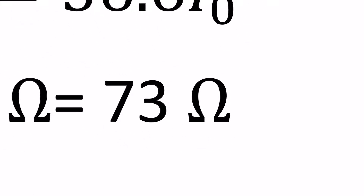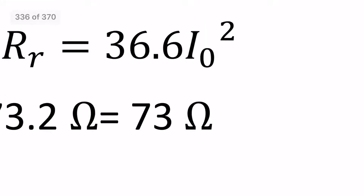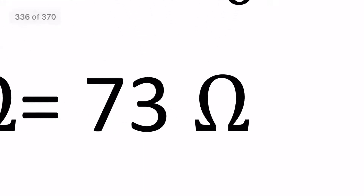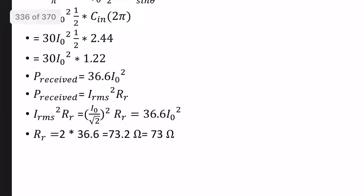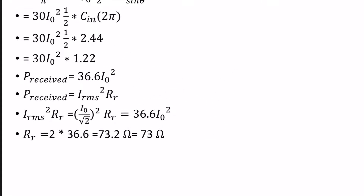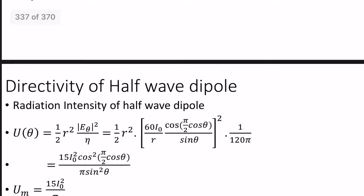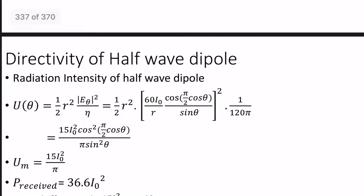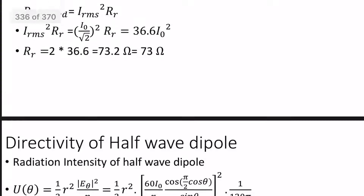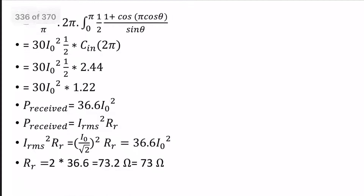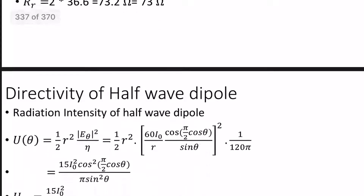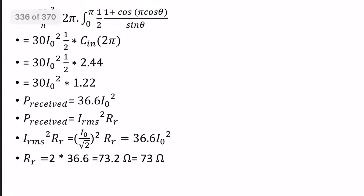So the radiation resistance is approximately 73 ohm. This is an important value: the half-wave dipole radiation resistance is 73 ohm. That's the math and the steps. Previously for short dipole, we do the same.